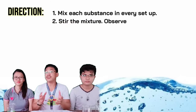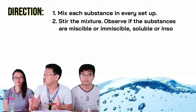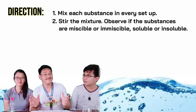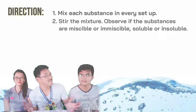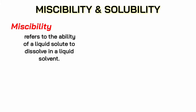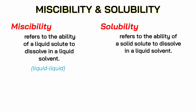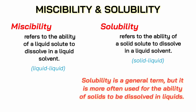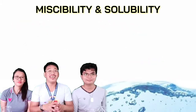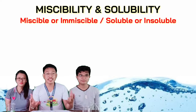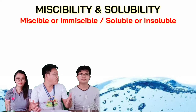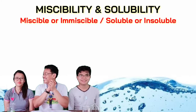The direction is simple: first, mix each substance in every setup, then stir the mixture and observe the miscibility and solubility of the substances. Miscibility refers to the ability of liquid substances to mix — two liquids are either miscible or immiscible. Solubility refers to the ability of solid substances to be dissolved in liquids — either soluble or insoluble. In this experiment we will observe whether the substances mixed are miscible or immiscible, soluble or insoluble.